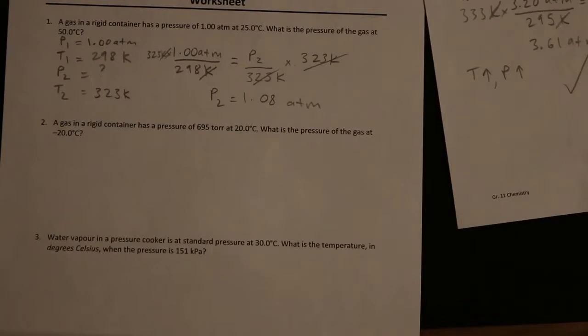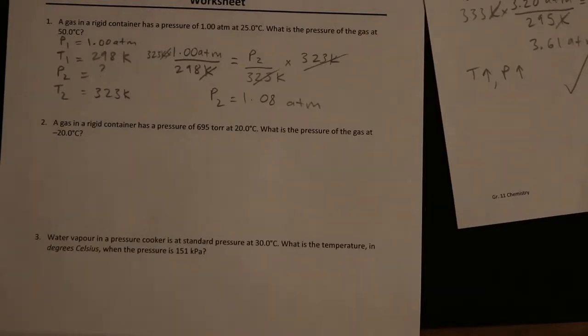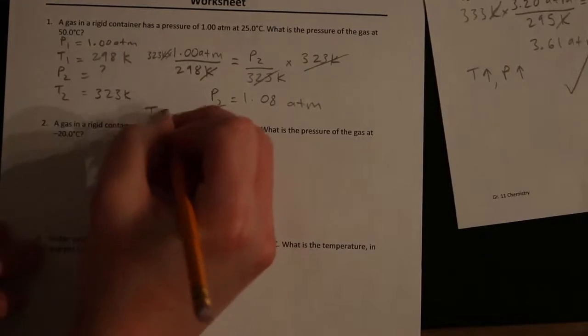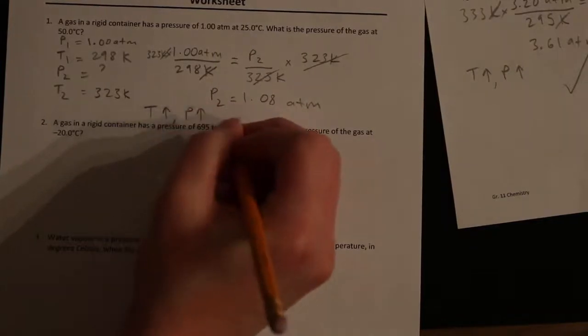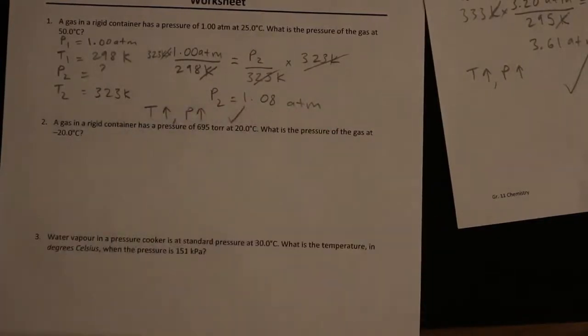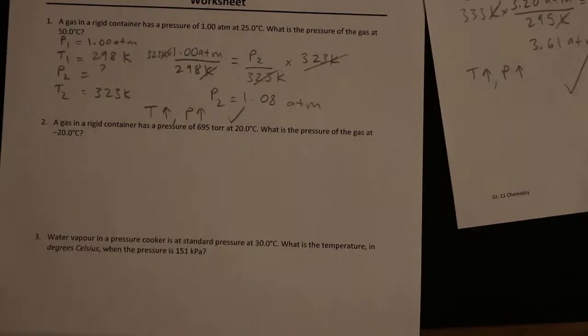Let's do our common sense check. Initial temperature was 298 Kelvin. Final temperature was 323 Kelvin. So temperature went up. We would expect pressure to have gone up as well. Initial pressure was 1 atm. Final pressure was 1.08 atm. So it did increase. It makes sense.